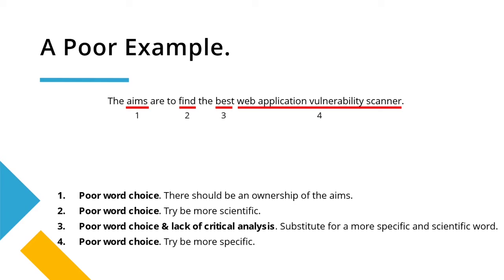Finally, 'web application vulnerability scanner' suffers from a lack of detail. Are you going to be looking at all web app vulnerability scanners? Is it going to be on WordPress? Is it going to be open source scanners? Make sure that you're granular enough in this definition so that you're not promising the sun or promising the world. Overall, this wouldn't achieve a good mark due to the points mentioned above — this would be quite low down.